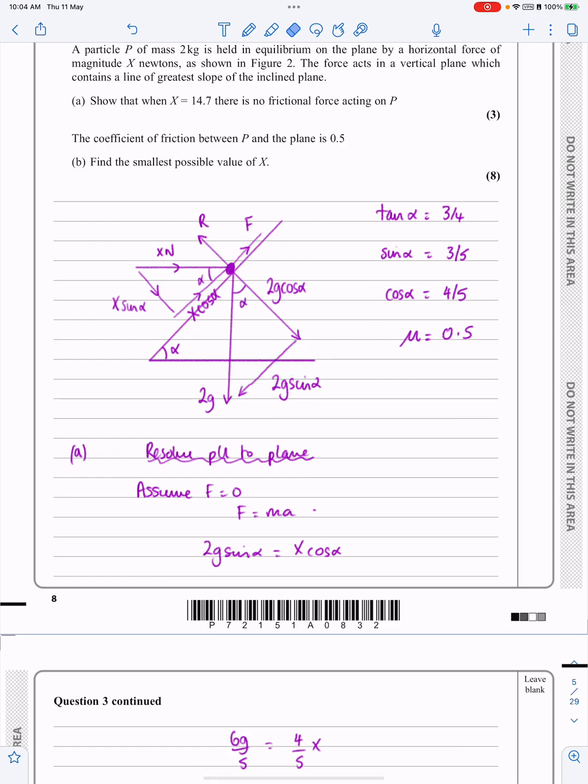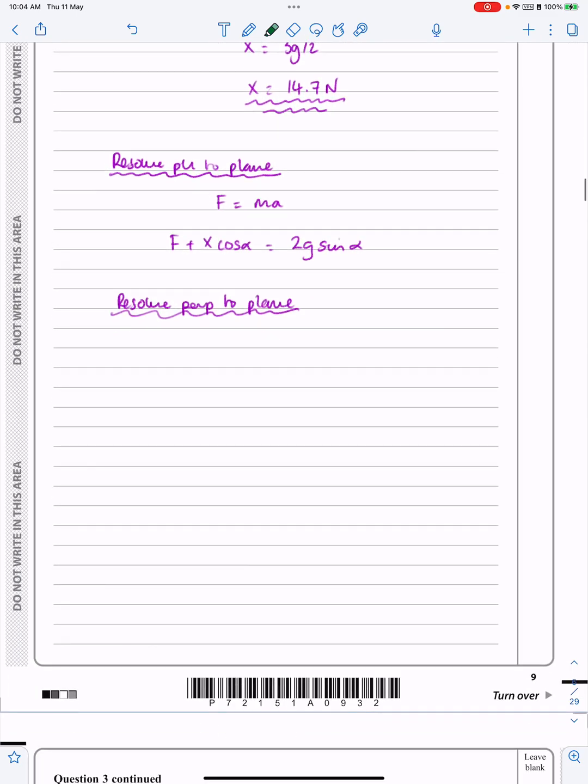Resolving perpendicular to the plane, I'm going to get F equals ma, but they're in equilibrium, so R is equal to 2g cos alpha plus X sin alpha. Let's put my cosines and my sines in and tidy all that up, so that's 8g over 5 plus 3X over 5. So that's R.